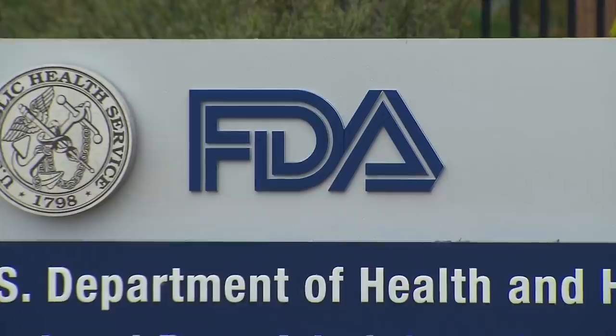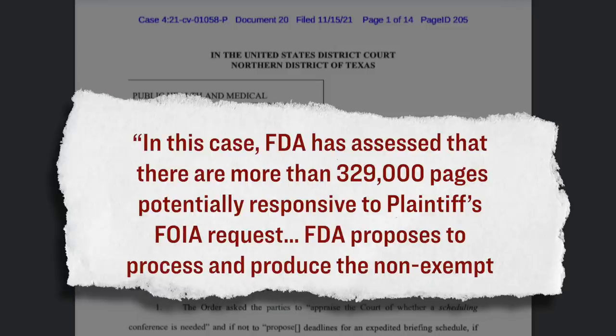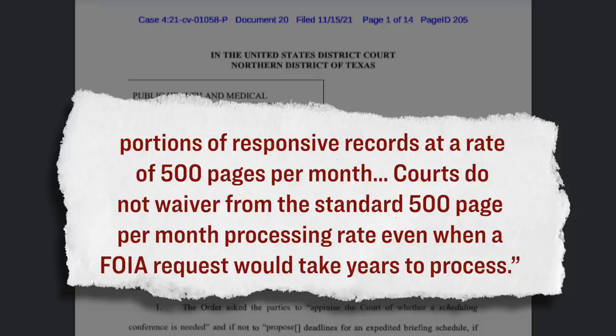However, with this transparency requirement that they have imposed on themselves, the FDA still went to this federal judge and made a certain request. They said that since there are in total 329,000 pages of documents relating to the approval of the Pfizer vaccine, they proposed to release 500 pages of documents per month. The FDA's rationale here was that this pace would give them enough time to redact any sensitive information in those documents, things like people's full names, their home addresses, their birthdays, and so on. However, the caveat is that if they were to actually release 500 pages a month, it would take them 55 full years to release all the documents.